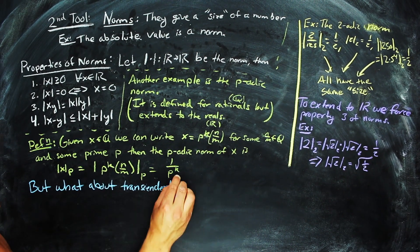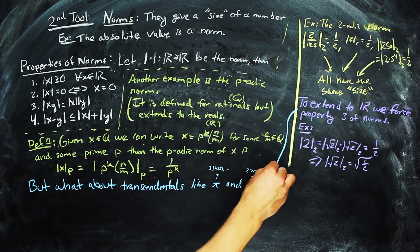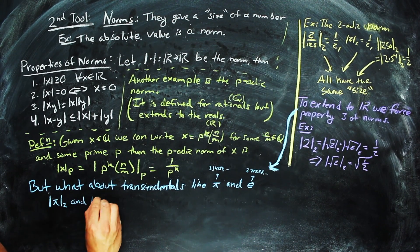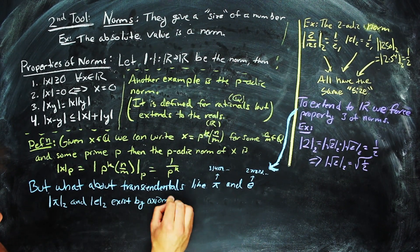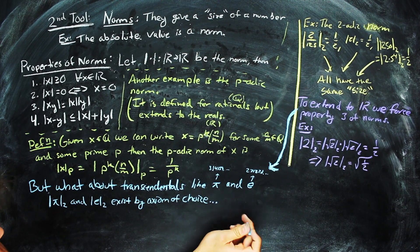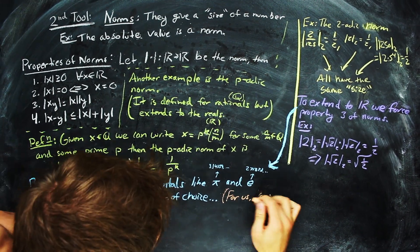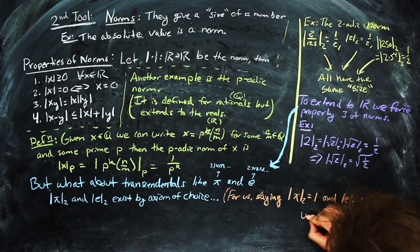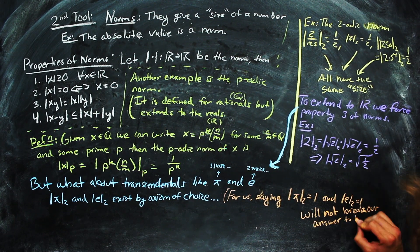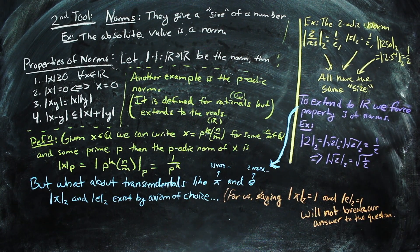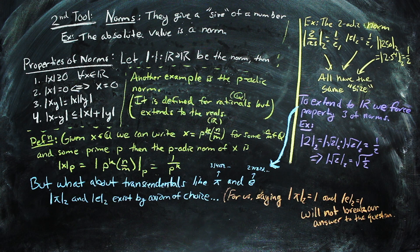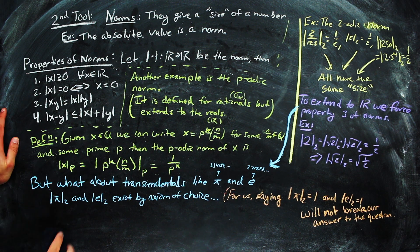For transcendental numbers like pi and e, this is a bit harder, but the axiom of choice tells us that they exist, even though they are not necessarily computable. If that isn't satisfying enough, we can just say that the two-adic norms of pi and e are just 1. It won't affect the following proof that we will use to answer our question about cutting squares into equal area triangles.